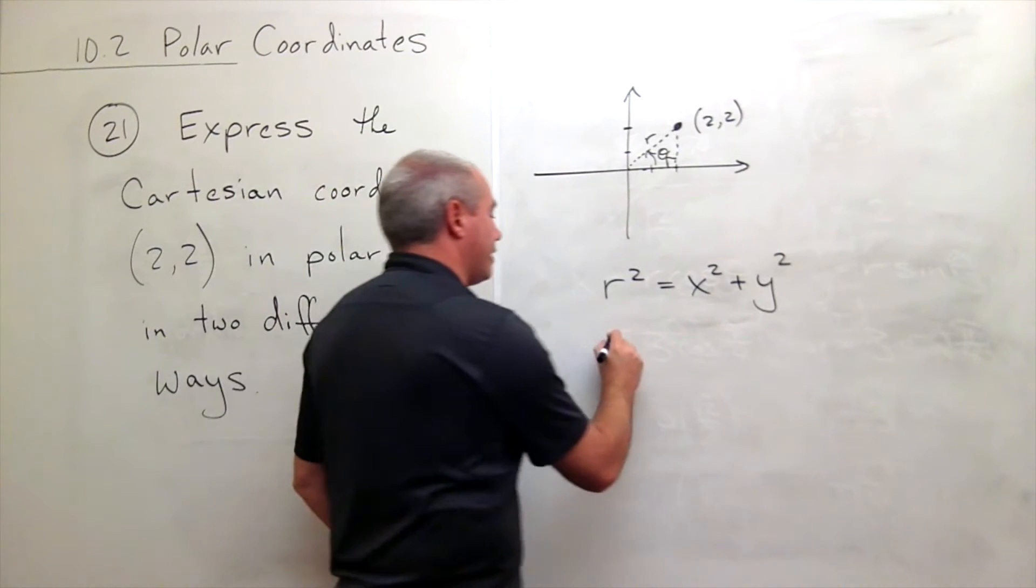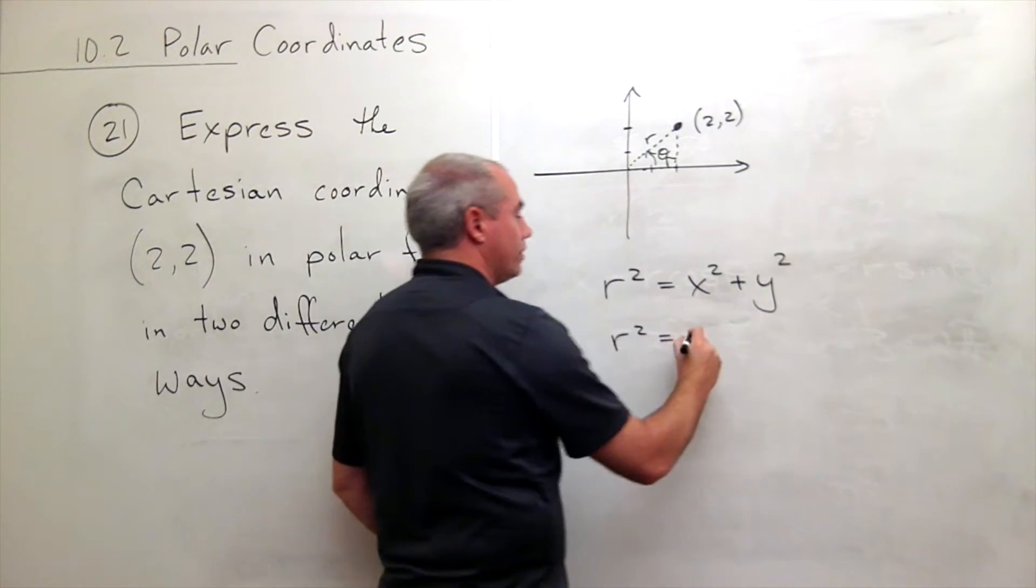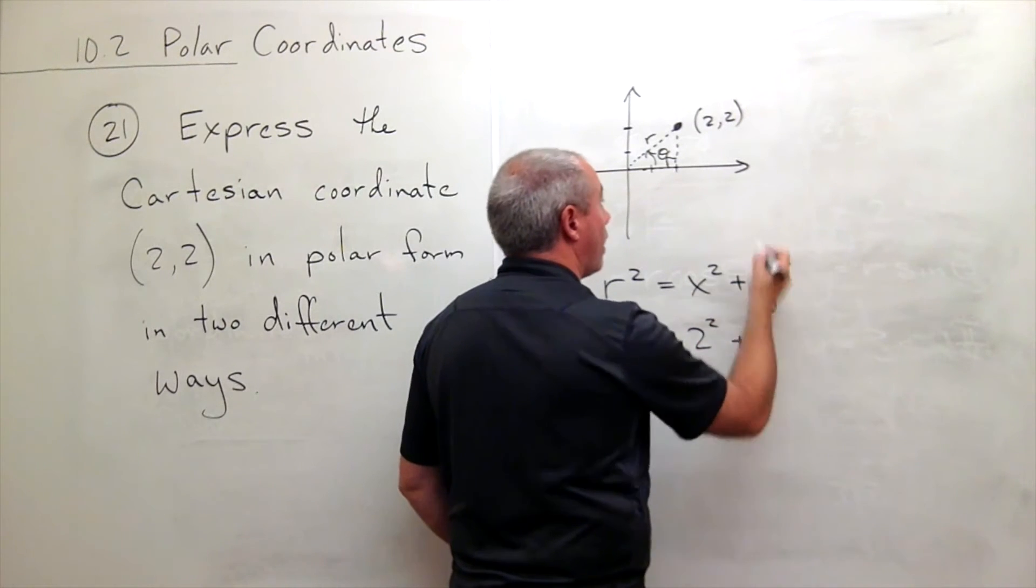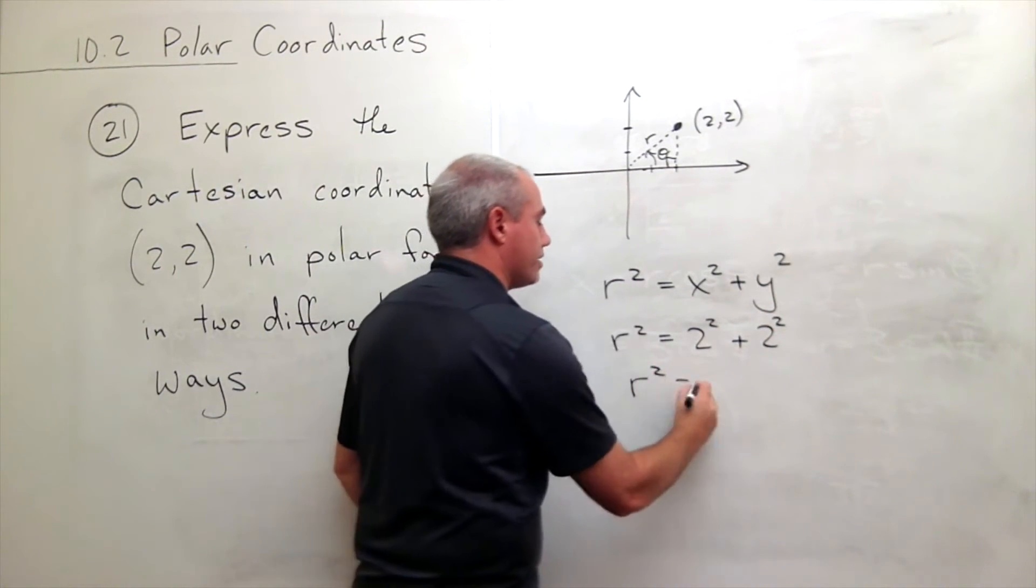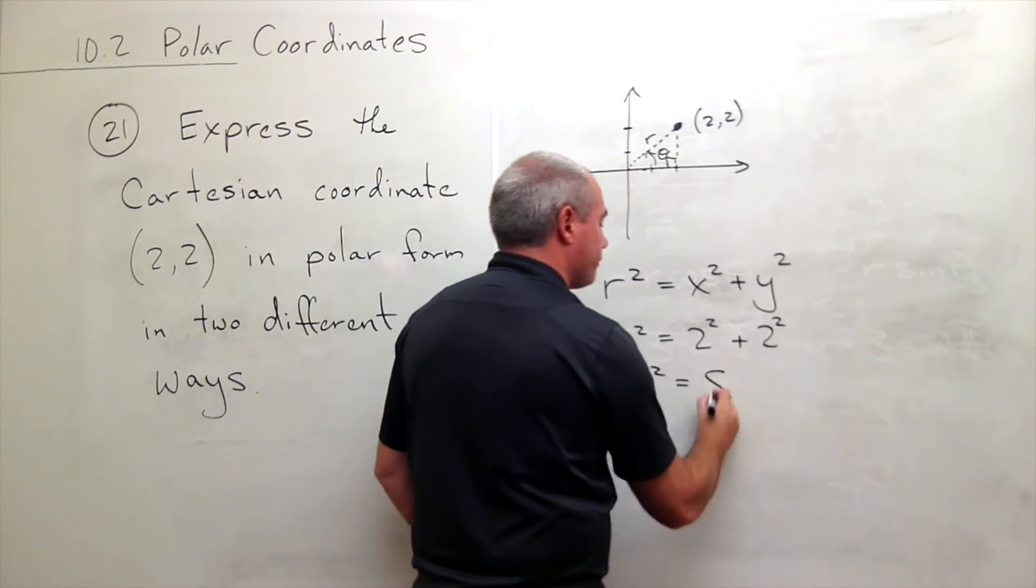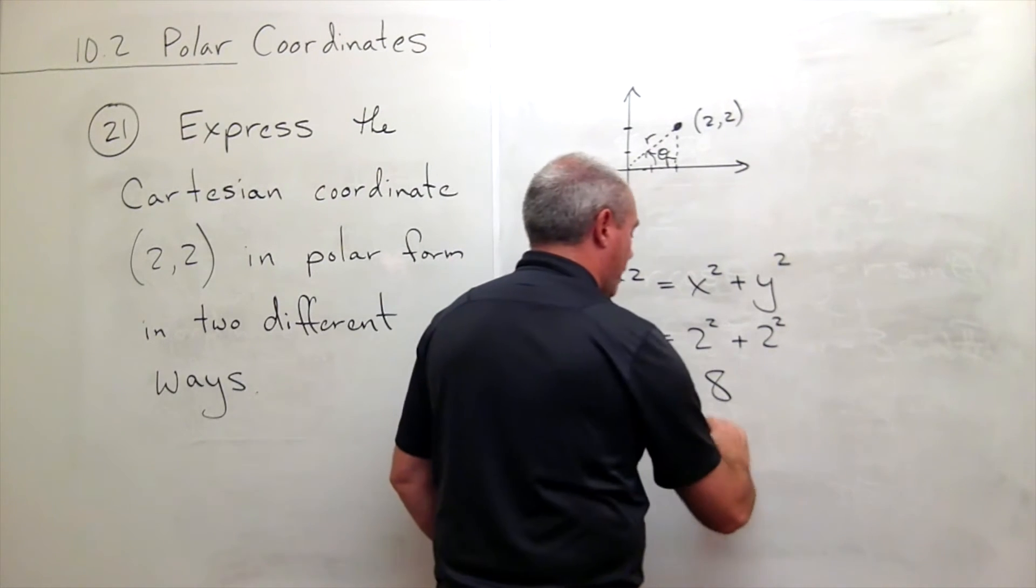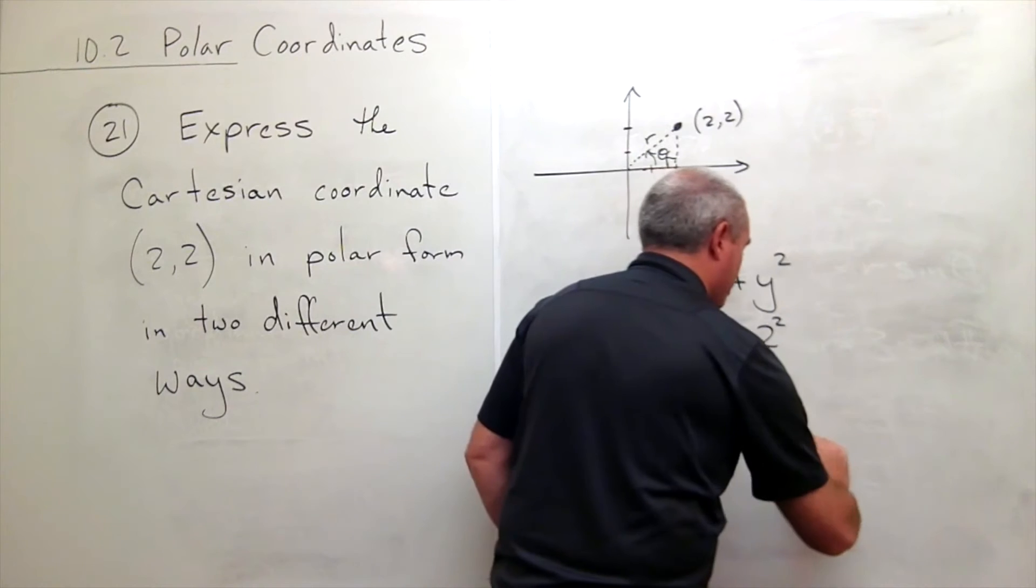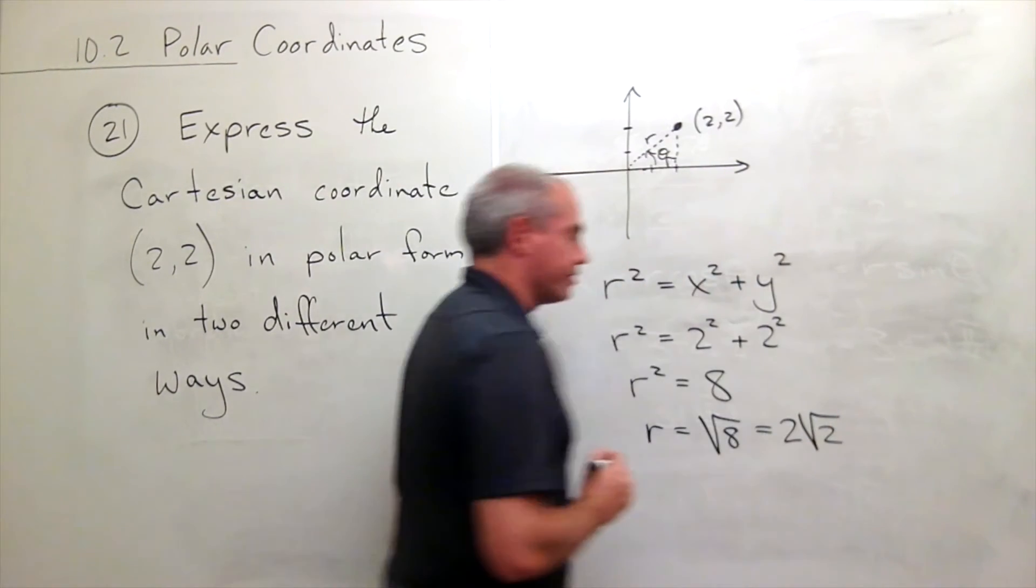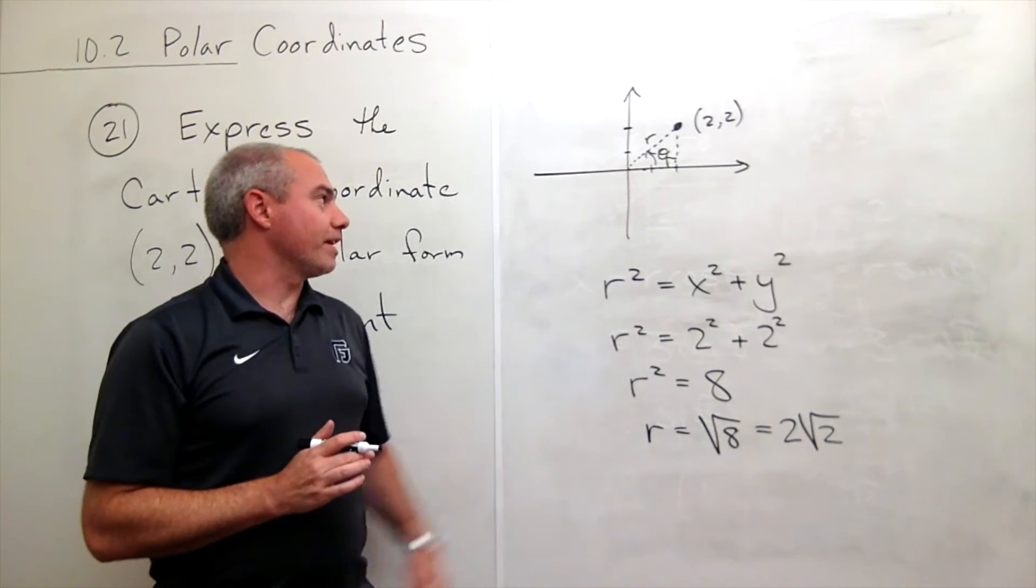If I plug in x and y, I get that r² equals x, which is 2, squared, plus y, which is 2, squared. In other words, r² is equal to 4 plus 4, which is 8. And so r is equal to the square root of 8, which is otherwise known as 2√2. All right, so I've got my r. That's very good.